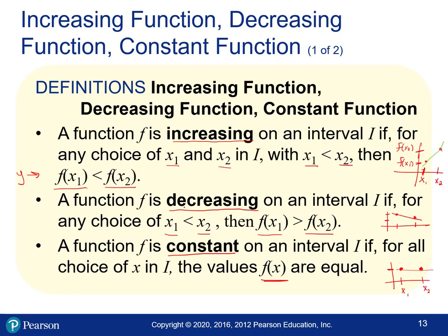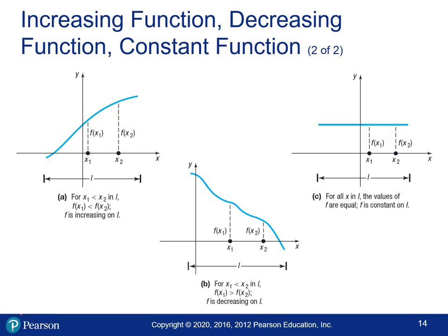To summarize: increasing means the y-values get bigger as the x-values get bigger; decreasing means the y-values get smaller as the x-values get bigger; and constant means the y-values stay the same the whole time on that interval. Here are pictures of each case — increasing goes up toward the right, decreasing goes down toward the right, and constant stays at the same height.